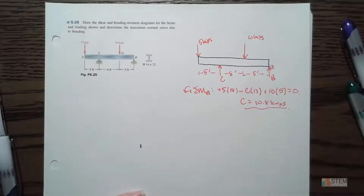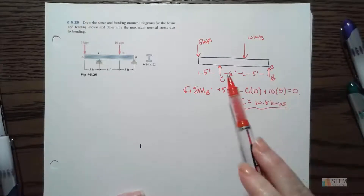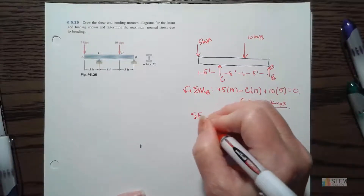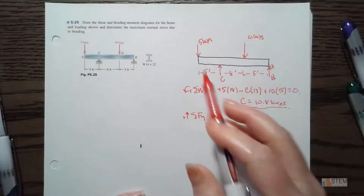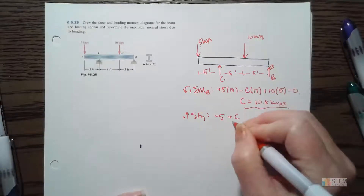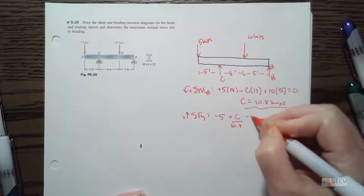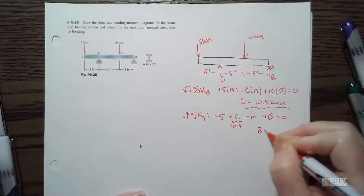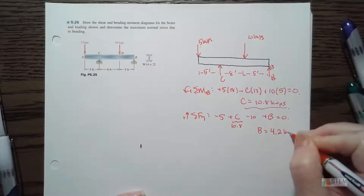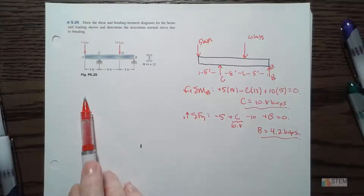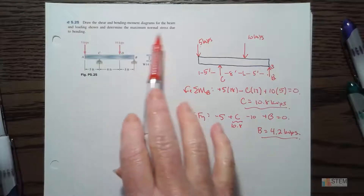Now we need to find B. You could do another moment equation about point C, or just do the summation of Y forces, which I'll do because it's a little easier. Negative five (going down) plus C — which is 10.8 — minus ten, plus B (going up). B is the only unknown and we get 4.2 kips. Now we've got our external supports found and we can go ahead and find our shear and moment diagrams, then find the max normal stress due to bending.